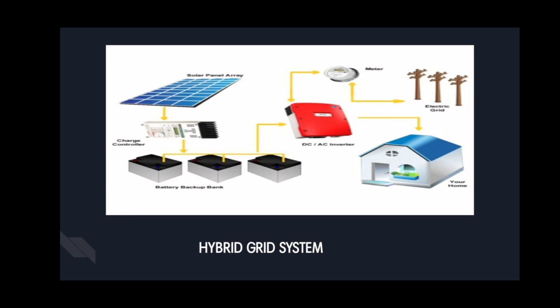The excess power can charge the batteries, which store the electricity. When the system is producing less electricity than demanded by the home, the batteries can make up the shortfall. Charging and discharging of batteries reduces the overall efficiency of the system. The hybrid system is complex to design and tough to install, and is more expensive than the other two types of grid systems.